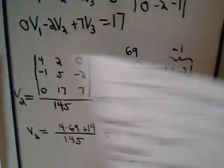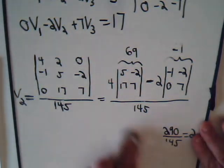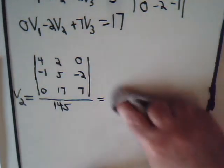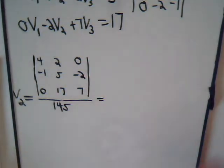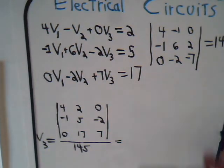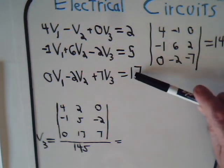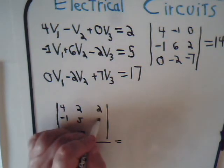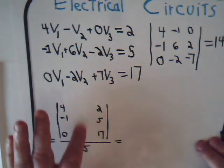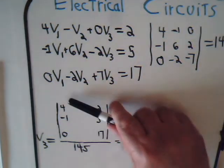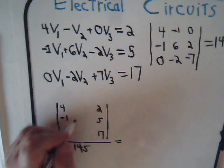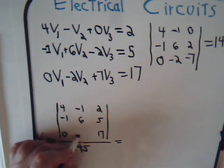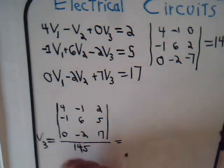Now let's determine V3, the third voltage at the third node. Now V3, the denominator always stays the same of course. For V3, we go back to our three equations, this column gets replaced with this column, the V3 column. So here we have 2, 5, 17, and of course here's the V1 column and the V2 column stays the same, so it's negative 1, 6, negative 2.